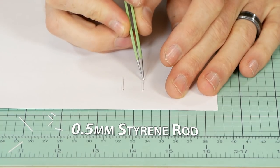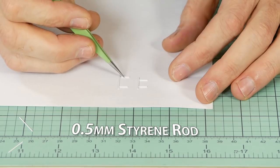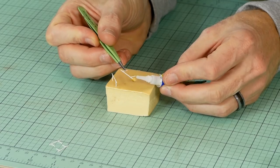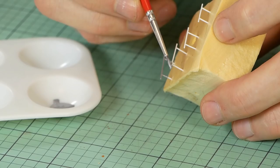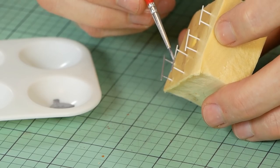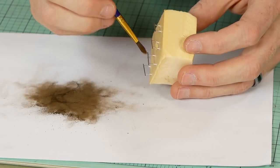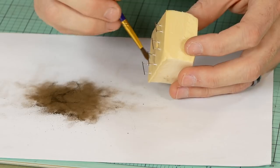I'm using 0.5 millimeter styrene rod and once it's been cut, assembled and glued together on the paper template, I then paint the rails with the silver acrylic paint as well as weather them with the dark earth weathering powder to help blend it all together with the rest of the model. Once that's done a layer of dull coat is applied.